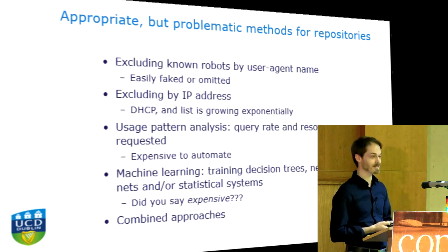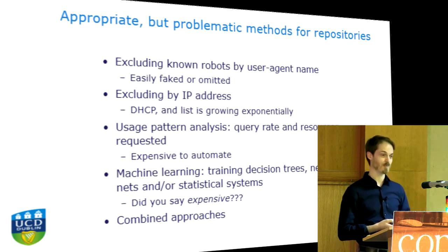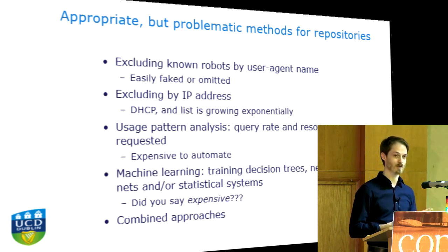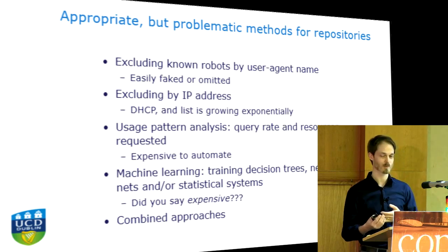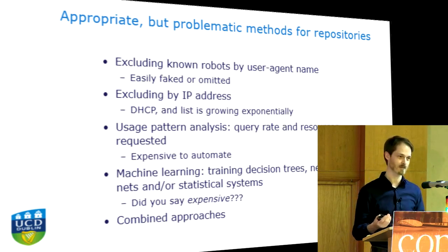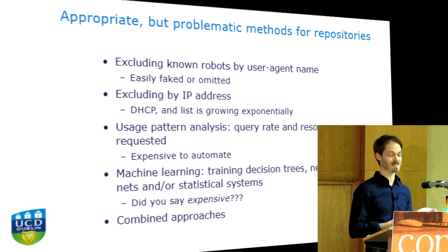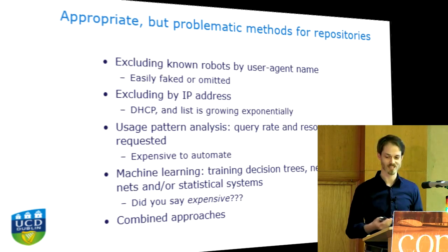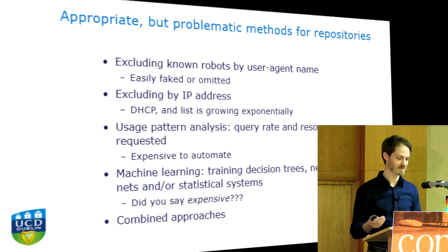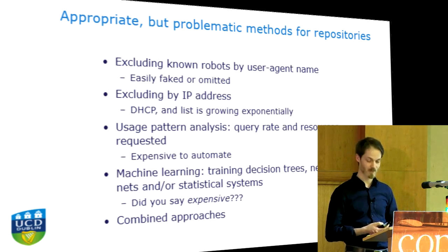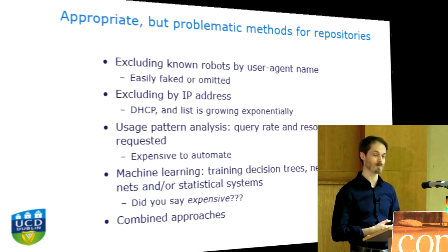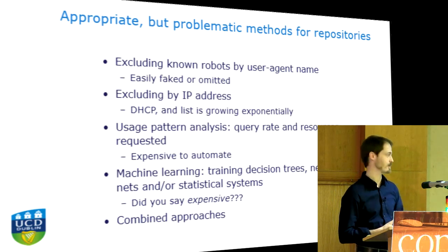IP address lists are problematic because once you know the IP, the IP can change. The bot can be created by a virus installed on your PC without your knowledge, so the IP address can be constantly changing and the list is constantly growing. Other methods are expensive, so combined approaches are generally what we go for in the public sector.